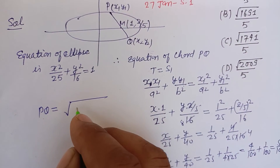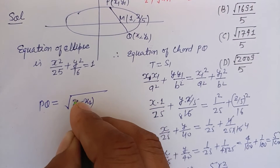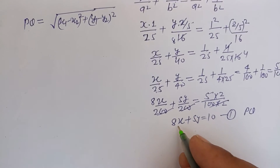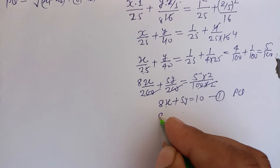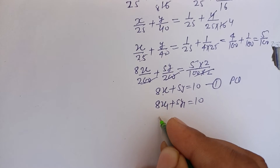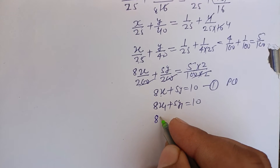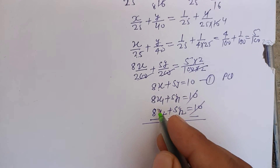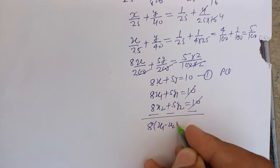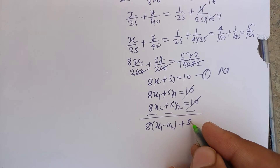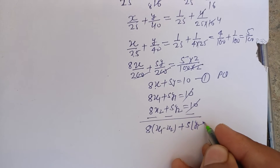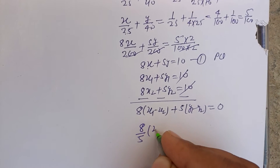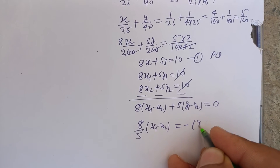To find the length of chord PQ we use the distance formula: PQ = √[(x₁−x₂)² + (y₁−y₂)²]. Since the chord passes through both endpoints, 8x₁ + 5y₁ = 10 and 8x₂ + 5y₂ = 10. Subtracting: 8(x₁−x₂) + 5(y₁−y₂) = 0, so y₁−y₂ = −(8/5)(x₁−x₂).